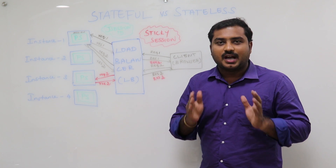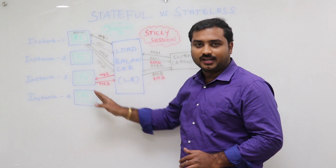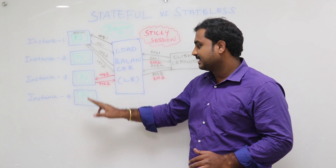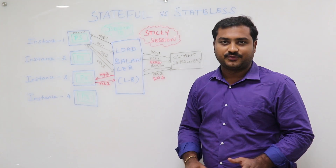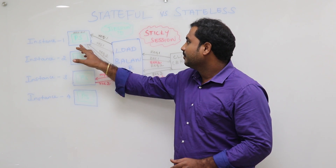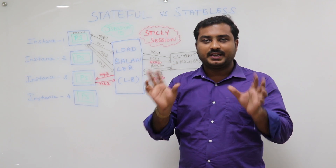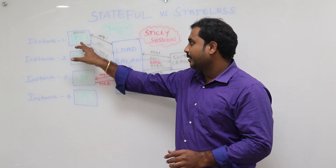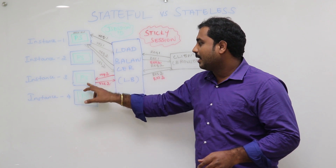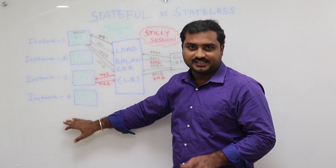On the DevOps side, assume there are four instances running: Instance 1, Instance 2, Instance 3, and Instance 4. Inside all the instances, assume there is a simple application running, developed by developers, called the product service. The same application is running inside all four instances.